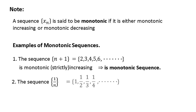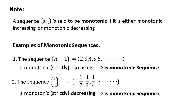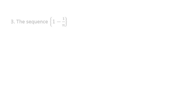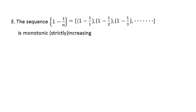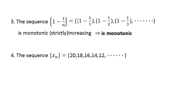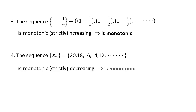Similarly, consider the sequence 1/n. Looking term by term, you can confirm it is a monotonic strictly decreasing sequence, and hence it is a monotonic sequence. For the sequence 1 − 1/n, the terms show it is monotonic strictly increasing and hence monotonic. Consider a sequence xn with terms 20, 18, 16, 14, and so on — you can confirm it is monotonic strictly decreasing and hence a monotonic sequence.